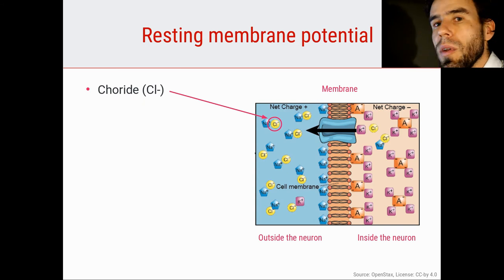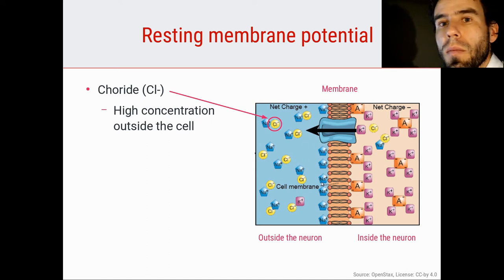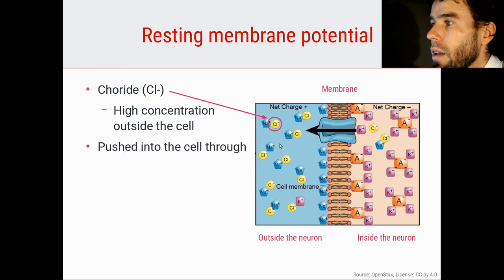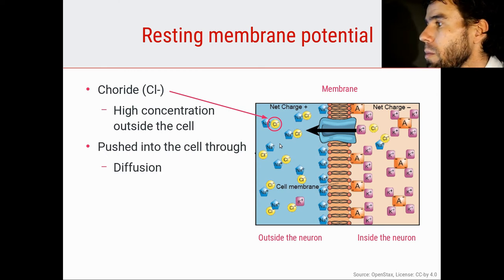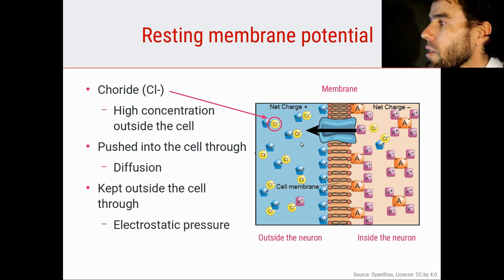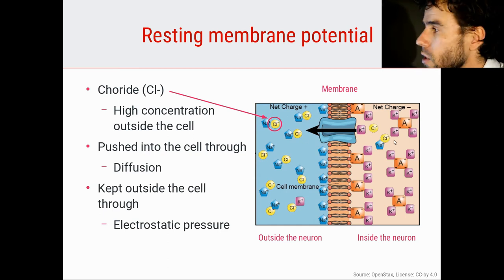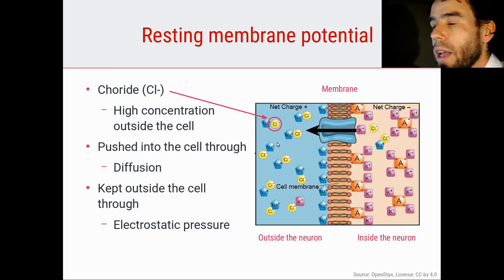Let's take a closer look at the chloride Cl minus ion. The Cl minus ion is negatively charged, and it has a higher concentration outside of the cell than inside — you can see in this picture that there are lots of Cl minus outside and very few inside. This means it is pushed into the cell through diffusion, because there is a surplus of Cl minus outside. However, it is kept outside of the cell through electrostatic pressure: Cl minus is negatively charged, the inside is also negatively charged, so the negative repels the negative and Cl minus ions are pushed out.